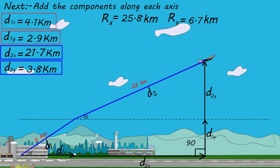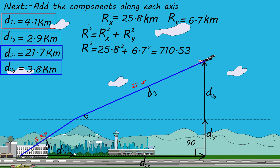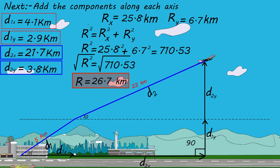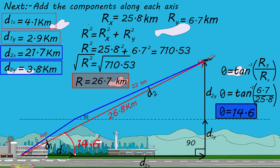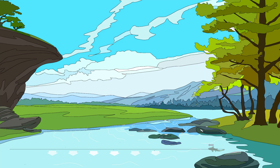Applying the Pythagorean theorem: R² = Rx² + Ry² = 25.8² + 6.7² = 710.53. So R = √710.53 = 26.7 km. To find the direction: theta = tan⁻¹(Ry / Rx) = tan⁻¹(6.7 / 25.8) = 14.6 degrees relative to the x-axis. The final displacement is approximately 26.8 km at 14.6 degrees.